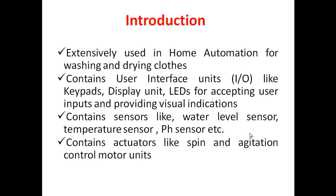If it is cotton, you require more water. Then there is a temperature sensor — this is to increase the temperature of water so that dust can be easily removed. Then a pH sensor is to identify how much detergent you are going to add to your clothes inside your washing machine, and finally, even with the help of the pH sensor, we can identify whether all soap has been removed by the water. So it contains actuators like spin, agitate, and motor control unit.